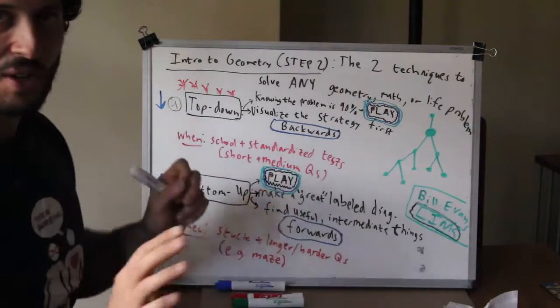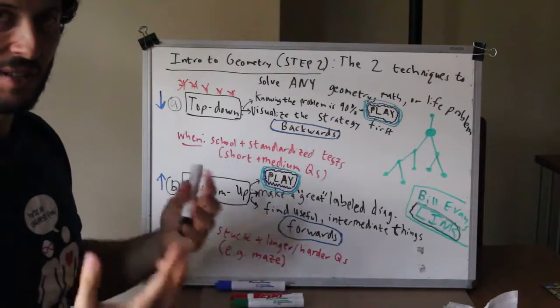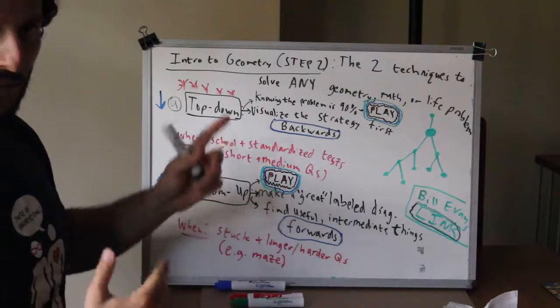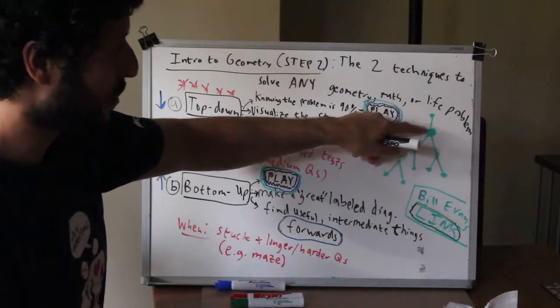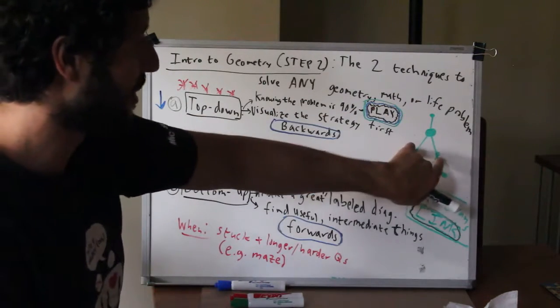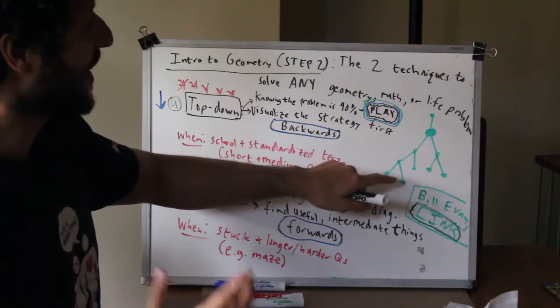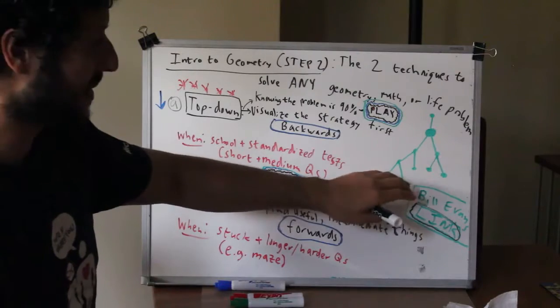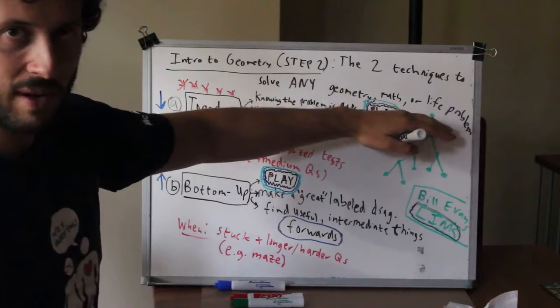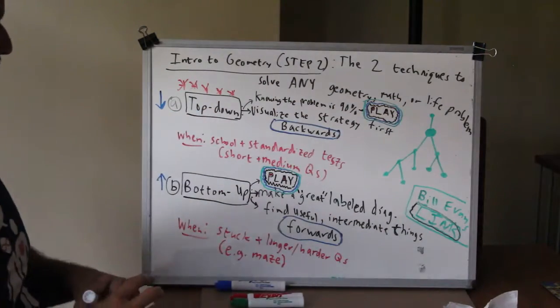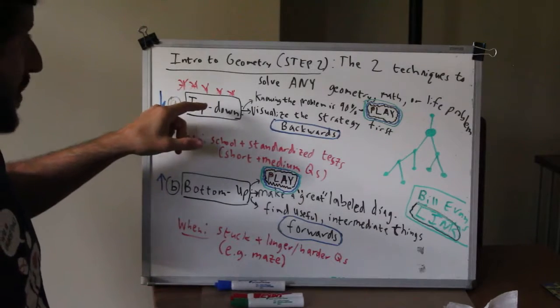We're going to visualize our strategy first. Don't just start number crunching and doing a ton of stuff. Think: what would I need to find this? Well I would need that. What I need to find this part? I would need these two. What I need to find these two? I need these four. And so that tells you to start over here because then you could work your way there. That's the top-down one.